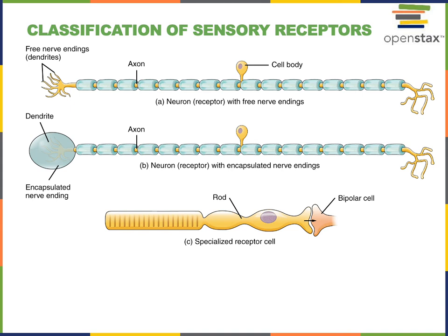We can also functionally classify sensory receptors. One functional classification is chemoreceptors, which detect chemicals dissolved in the extracellular fluid. The sense of smell, also known as olfaction, and the sense of taste, known as gustation, are both senses that require chemoreceptors. Chemoreceptors are also important for monitoring the concentration of chemicals in the blood.